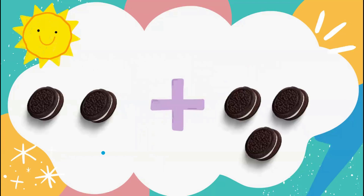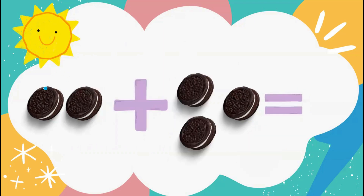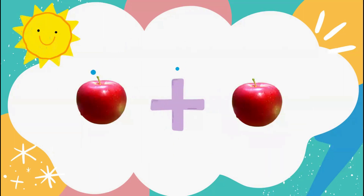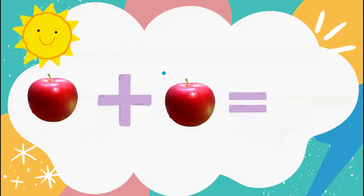For this problem we have 2 cookies plus 3 cookies — we want to find the total sum. Let's add: 2 plus 3 equals. Count with Miss K: 1, 2, 3, 4, 5. The answer is 5. Now I have 1 plus 1 — 1 plus 1 equals 2. Good job.